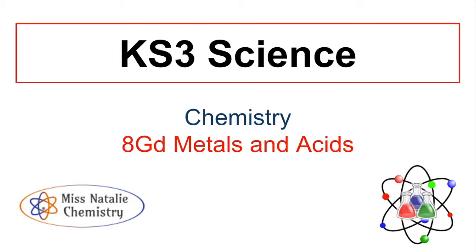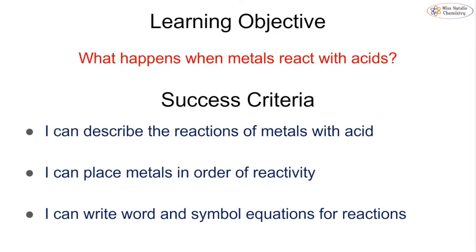In this video we're going to be looking at topic 8GD, which is metals and acids, as part of the year 8 exploring science curriculum and key stage 3. Our learning objective today is to answer the question: what happens when metals react with acids? By the end of this lesson you should be able to describe the reactions of metals with acid, use this to place metals in order of reactivity, and be able to write word and symbol equations for these reactions.